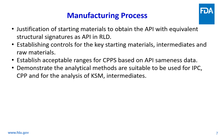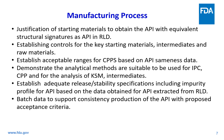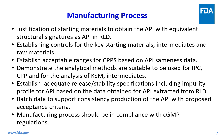Demonstrate that analytical methods are suitable for in-process controls (IPC), critical process parameters (CPP), and other analysis of key starting materials and intermediates. Establish adequate release and stability specifications, including impurity profile for the API, based on data obtained for the API extracted from the RLD. Batch data on at least three batches is required to show a consistent process. The manufacturing process should be in compliance with cGMP regulations.